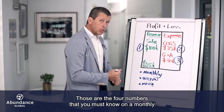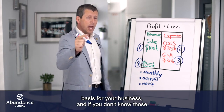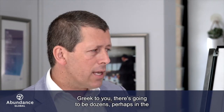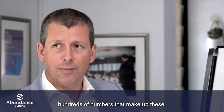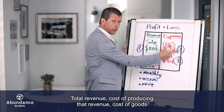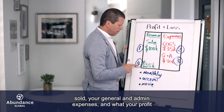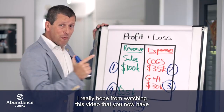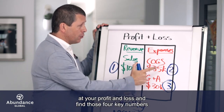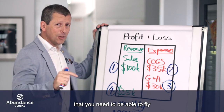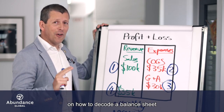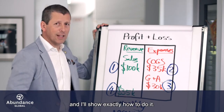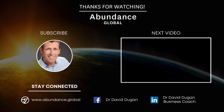Those are the four numbers that you must know on a monthly basis for your business. If you don't know those, you are flying blind. When you look at your profit and loss and it looks like Greek to you, there are going to be dozens — perhaps hundreds — of numbers that make up these four. All I want you to do is go and find them: total revenue, cost of producing that revenue, your cost of goods sold, your general and admin expenses, and what your profit or loss was for that period. I really hope this video gives you real certainty and clarity on how to look at your profit and loss and find those four key numbers to fly your business with absolute certainty. I have another video on how to decode a balance sheet — click the link below and I'll show you exactly how to do it.